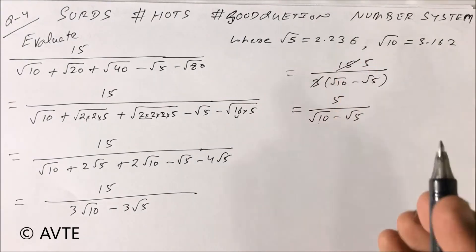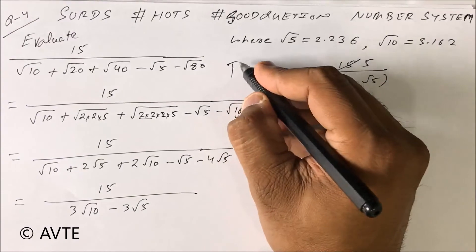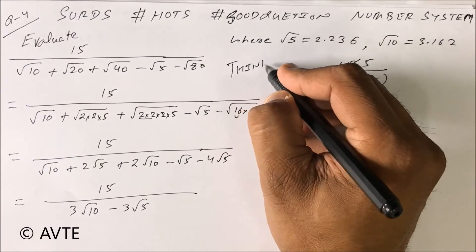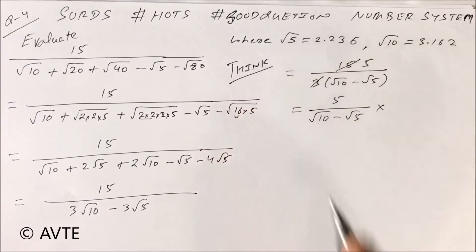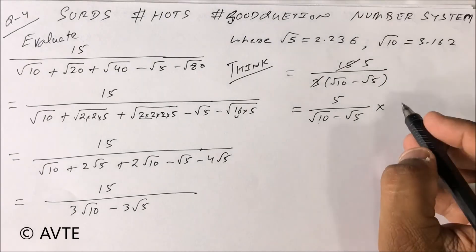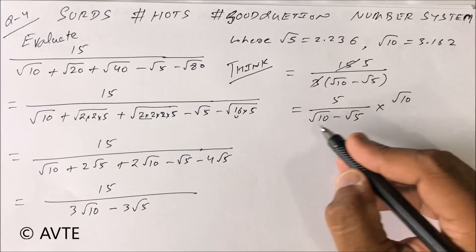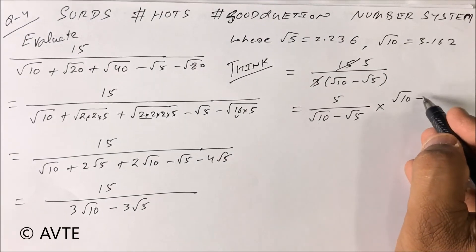What to do now? Now you have to do rationalization of binomial. Root a minus root b is root a plus root b.